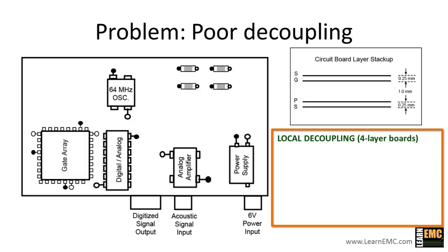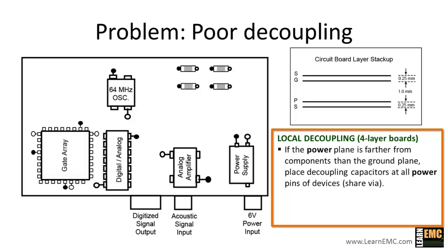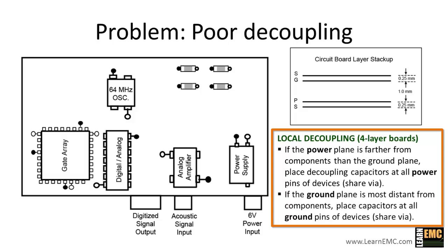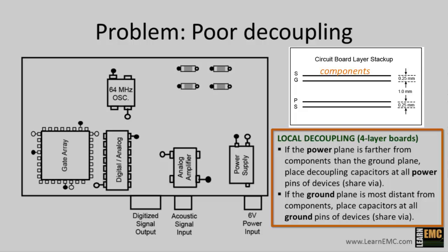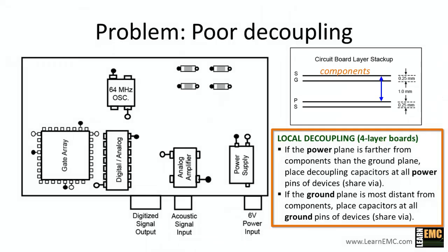Here's a method for locating decoupling capacitors on boards with widely spaced power and ground planes. This method assumes that the active devices and decoupling capacitors are on the same side of the board, which is the case we have here. First, look at the layer stack up to determine which plane — power or ground — is the most distant from the component layer. If the power plane is farthest from the component layer, then the decoupling capacitor should be placed at the power pins of the devices. Whereas if the ground plane is most distant from the components, the decoupling capacitor should be placed at the ground pins of the devices. For this example, the power plane is farther from the component layer than the ground plane, so we want to locate the decoupling capacitors near the power pins of the components.